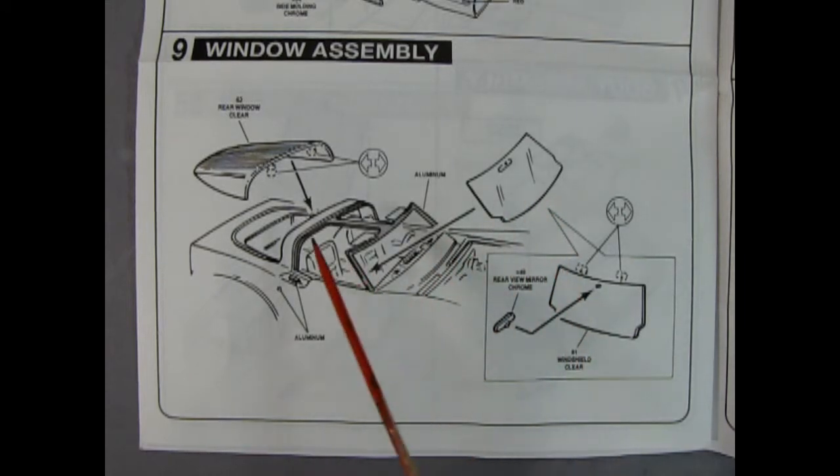However, here we have our front mirror being glued in on the back of the clear windshield and then it shows our door handles being painted aluminum as well as the window frame.